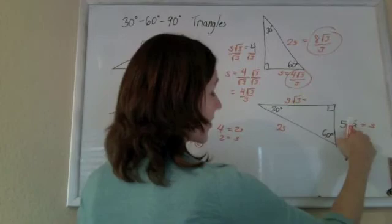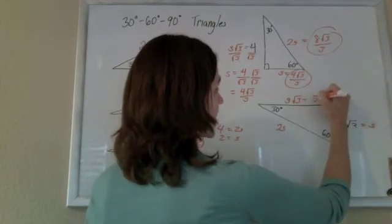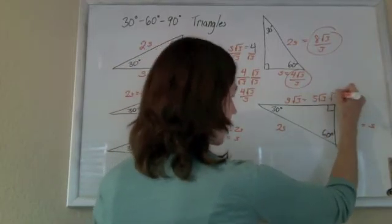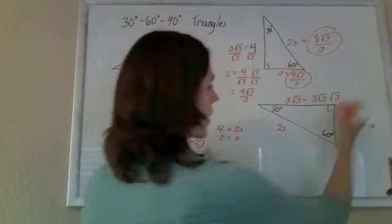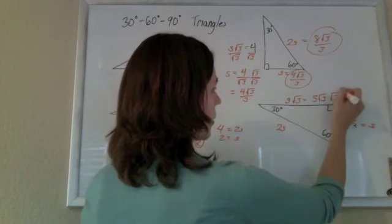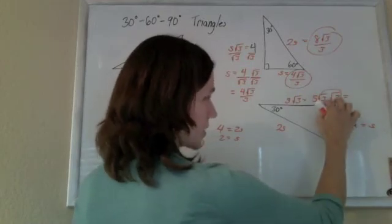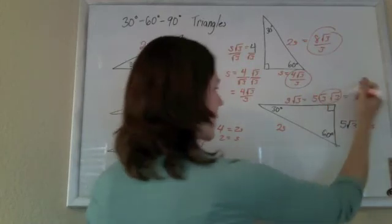So S is 5 root 3. So this thing is 5 root 3 times root 3—S times root 3. Kind of gross, but we can do it. We know that root 3 times root 3 is 3, and 3 times 5 is 15.